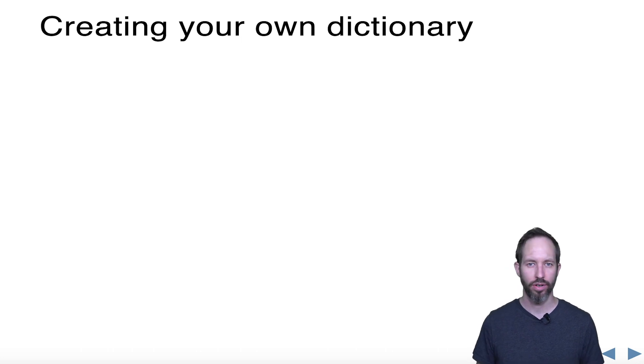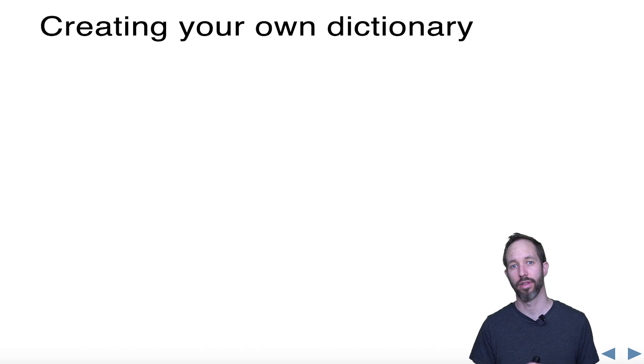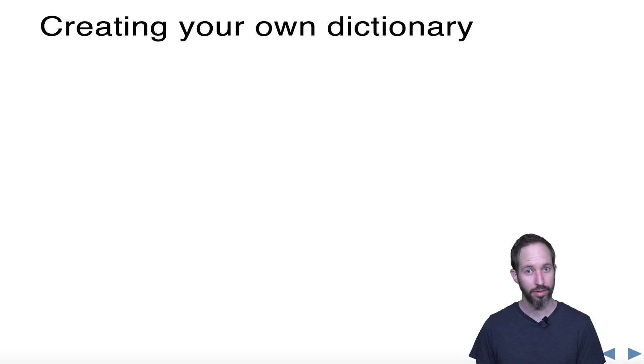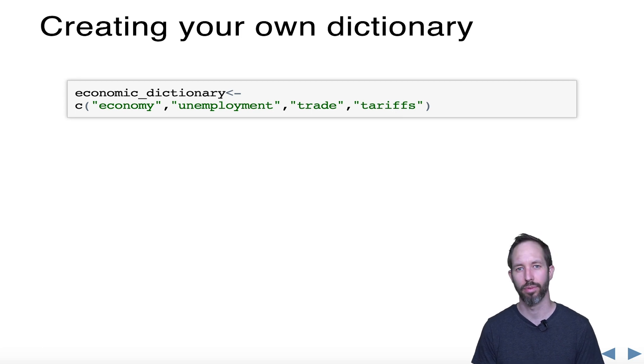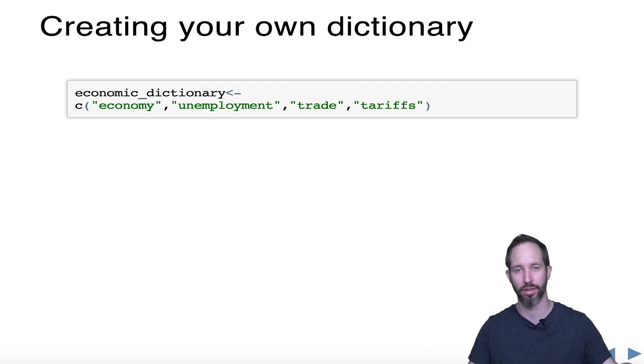Okay, so that's how you explore your corpus. Now let's talk about creating your own dictionary. Suppose we have our Trump tweets and we want to search out tweets about the economy. Suppose a computational social scientist wants to look at the performativity of Trump tweets — for example, if Trump talks about the economy, does that have some kind of impact on the stock market? As a first step, we'd come up with a list of words associated with economics.